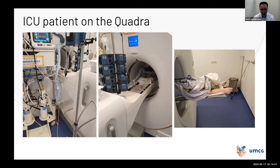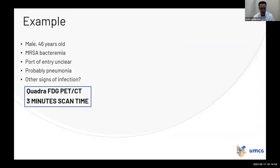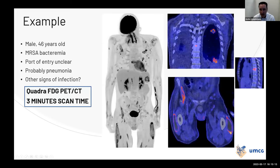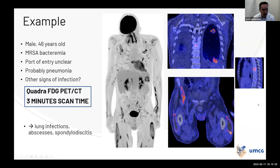This is an ICU patient at our Quadra system. First example: a 46-year-old male with bacteremia, probable pneumonia, but unclear port of entry — clinicians asked for other signs of infection. This is a three-minute scan on the Quadra PET-CT with FDG. The results are quite amazing: not only pneumonia, but also many abscesses in the muscles — in the upper leg region and thoracic region — and spondylodiscitis. All this in just three minutes, with a 106-centimeter field of view.